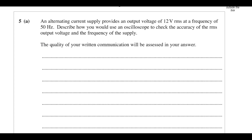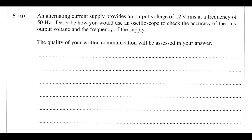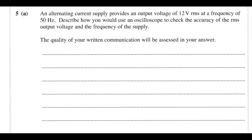Question 5 is about AC circuitry. Note: those on the new specification may not have done AC yet, as it's now in Year 13 — if so, skip ahead. We've got an alternating current supply with an RMS output voltage of 12 volts and a frequency of 50 Hz.